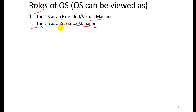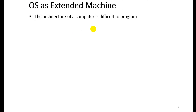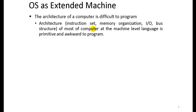The second role of the operating system is as a resource manager. The operating system is also an extended machine. The architecture of a computer is very difficult to program directly — the hardware architecture is complicated and primitive, and programming it directly does not offer flexibility or convenience.